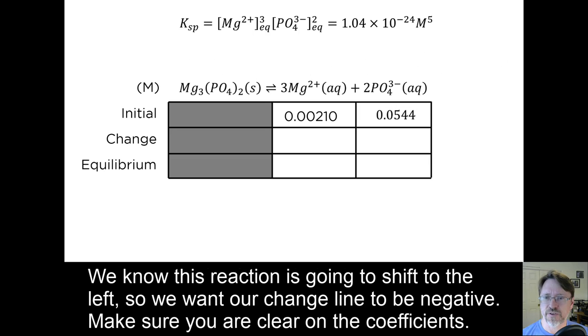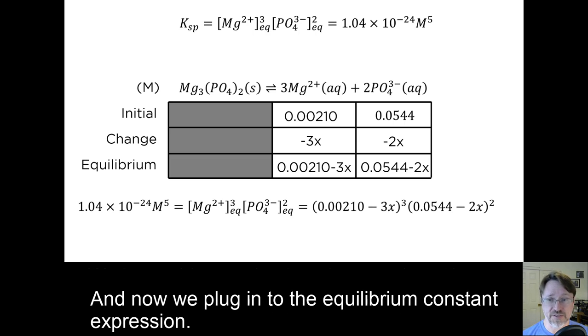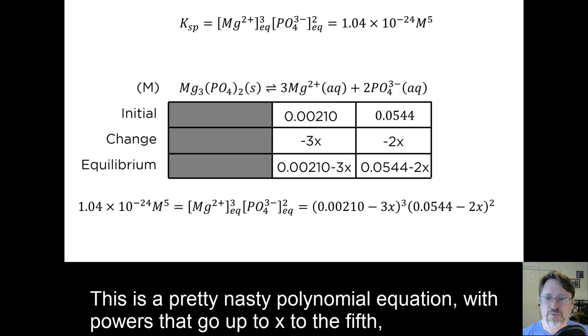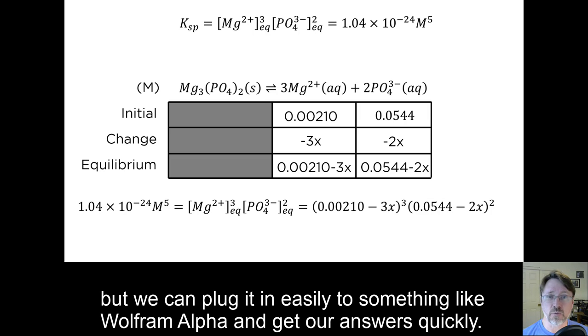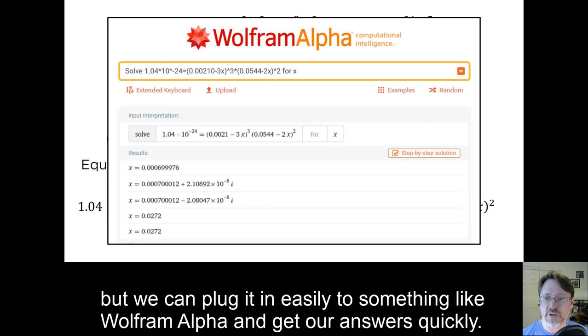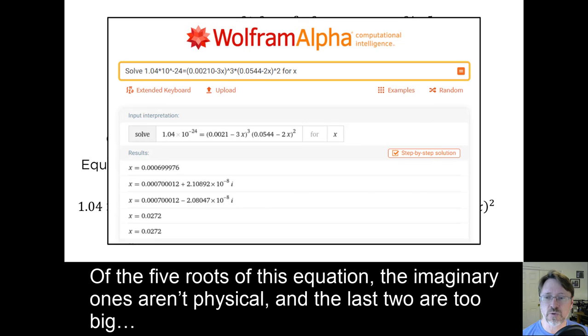We know this reaction is going to shift to the left, so we want our change line to be negative. Make sure you're clear on the coefficients. And now we plug into the equilibrium constant expression. That's a pretty nasty polynomial equation with powers that go up to x to the fifth, but we can plug it in easily to something like Wolfram Alpha and get our answers quickly.